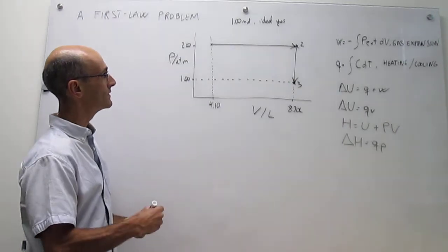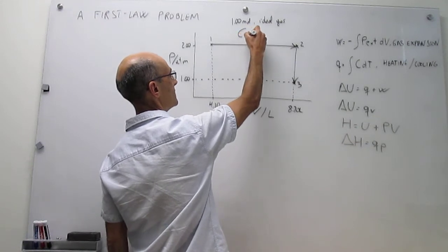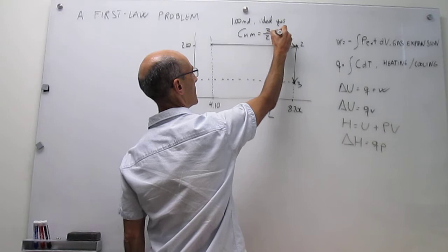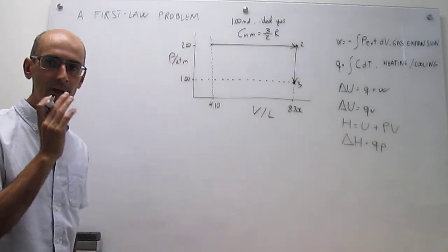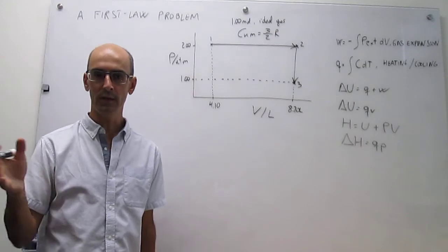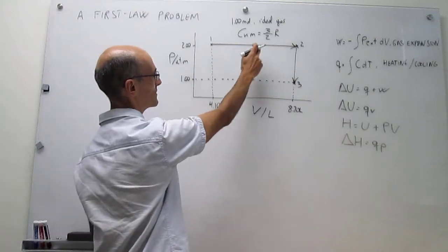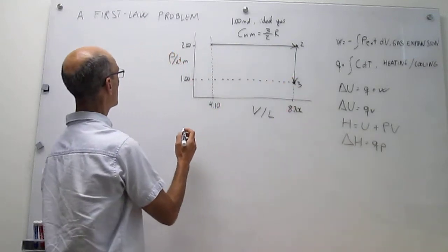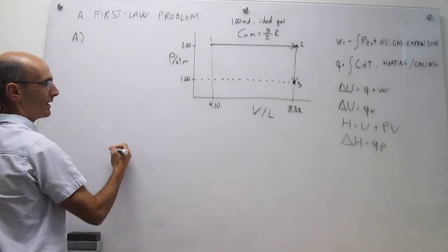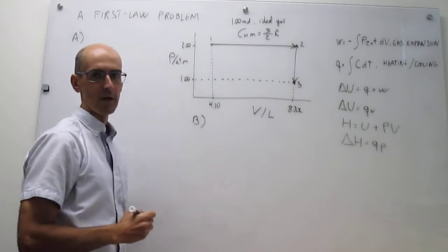There's one more piece of information: the heat capacity of this ideal gas at constant volume, which happens to be three-halves R, where R is the gas constant. We're going to go step by step and figure out work, heat, internal energy, and enthalpy for each one of these two steps. From one to two will be step A, and from two to three will be step B.